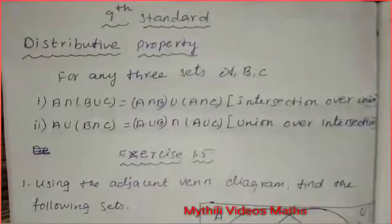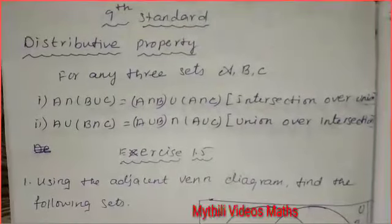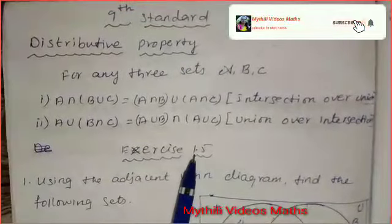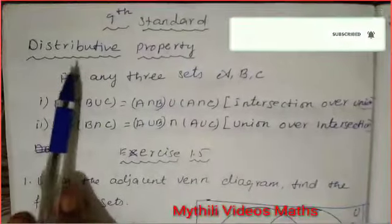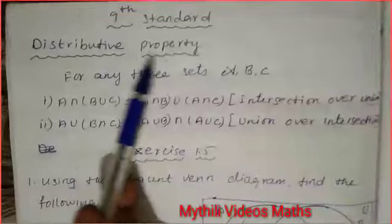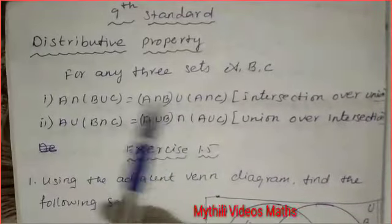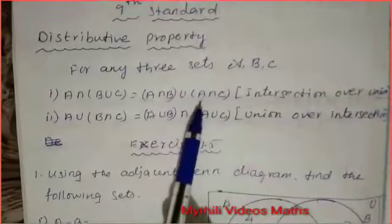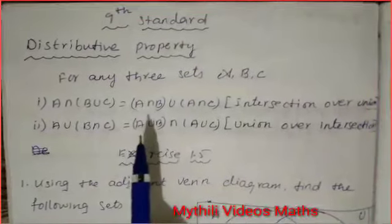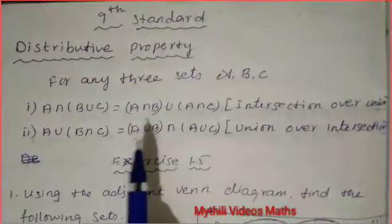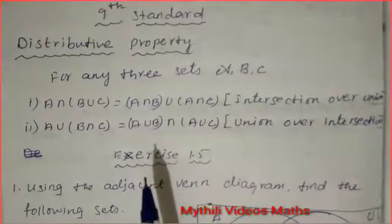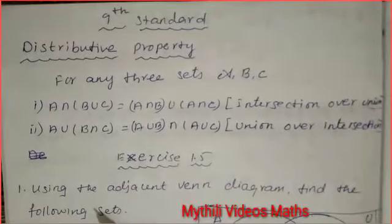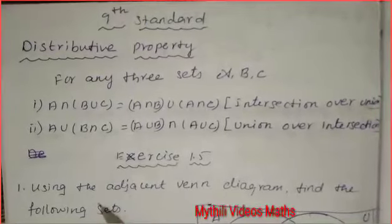This is 9th Maths. Today we are going to see Exercise 1.5. Before that, we have to see the formula — that is distributive property. Distributive property has two formulas, for any three sets A, B, C. Before that, we already saw closure property, associative property, and commutative property.